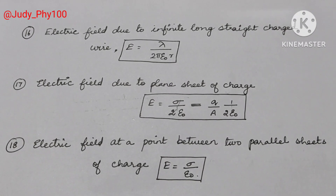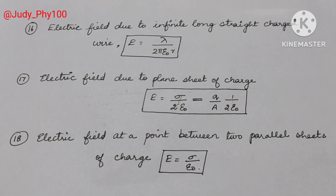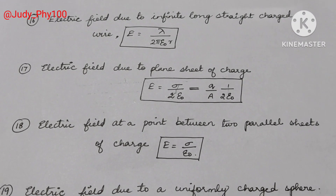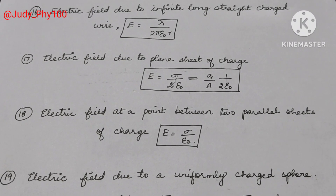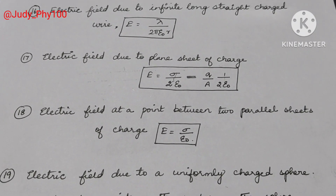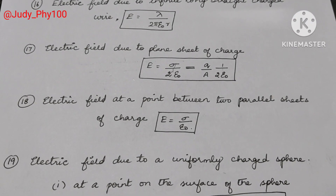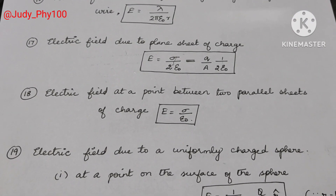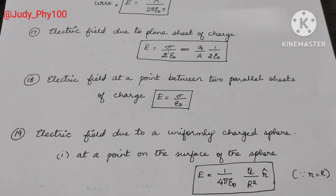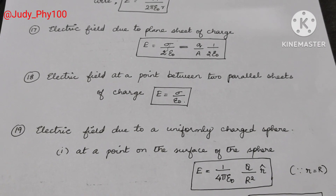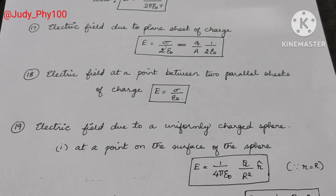Electric field at a point between two parallel sheets of charge: E is equal to sigma divided by epsilon naught. Electric field due to a uniformly charged sphere: at a point on the surface of the sphere, E is equal to 1 by 4 pi epsilon naught, Q divided by capital R squared, where small r equals capital R.